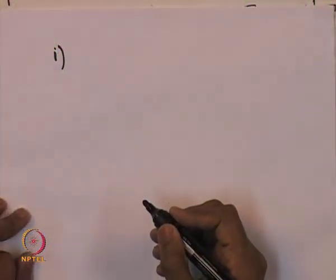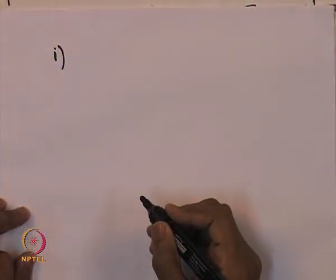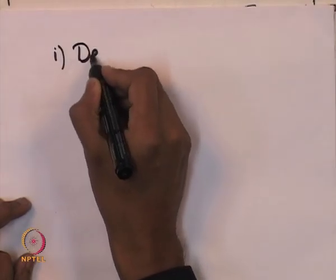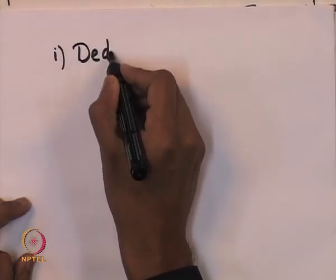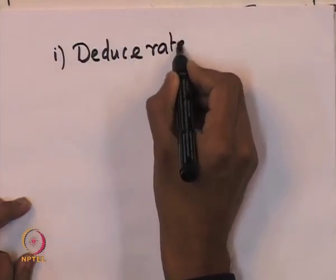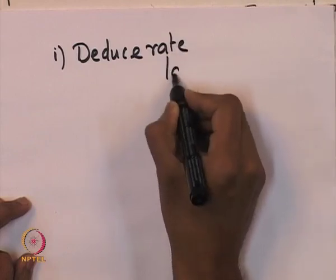Let us summarize what we have learnt in the last lecture. We have learnt how to, if there is a heterogeneous catalytic reaction, deduce the rate law from experimental data.